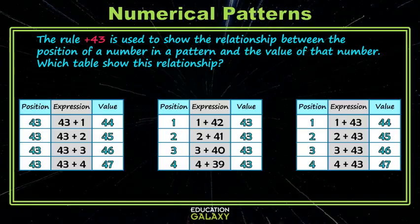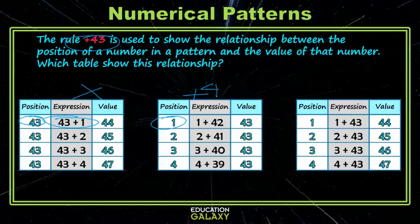In this first table, my position number is 43 and my rule is to add 43 — but this shows 43 plus 1, when it should show 43 plus 43. This is not correct. In the second table, my position number is 1 and my rule is to add 43, but here I'm adding 42. This is not correct. In my last table, I have a position of 1, and I am correctly adding 43 and end up with 44. That works for each of the values, so this table is correct.